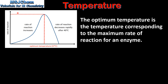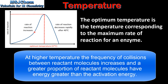We'll start by looking at the effect of temperature on the activity of an enzyme. From this graph we can see that as temperature increases, the rate of reaction also increases. The reasons for the increased rate of reaction are: as temperature increases, the frequency of collisions between reactant molecules also increases, and at higher temperature there's a greater proportion of reactant molecules that have energy greater than the activation energy. So the rate of reaction increases until the optimum temperature, which is around 37 degrees C.